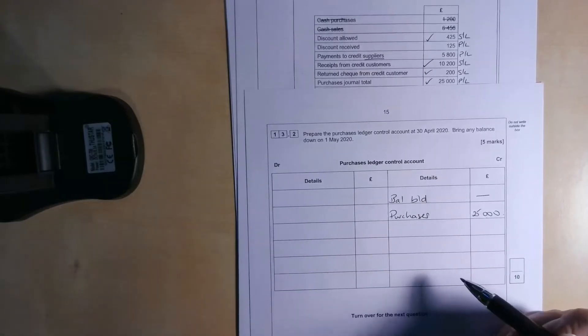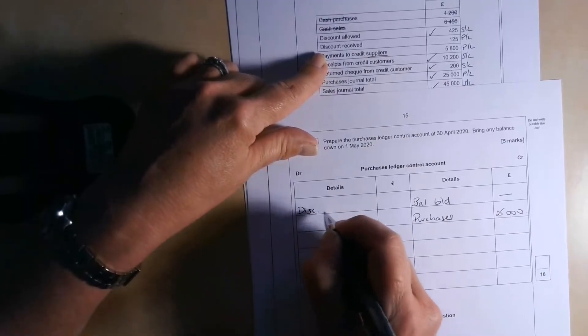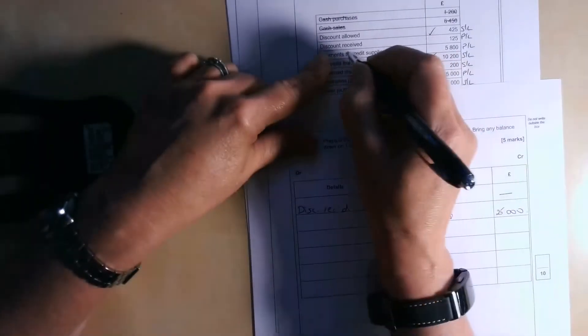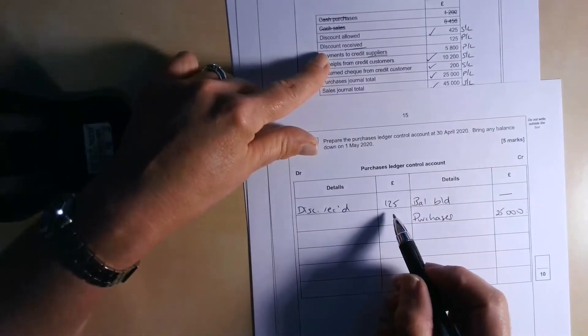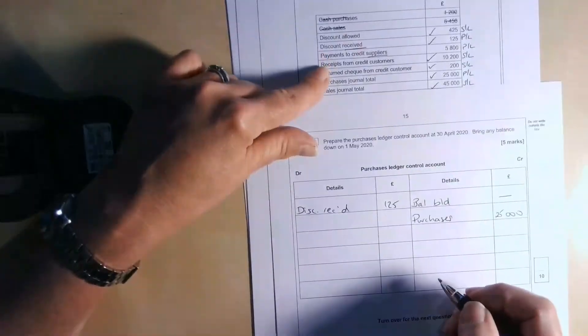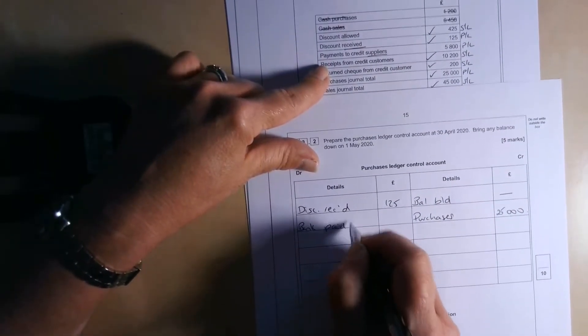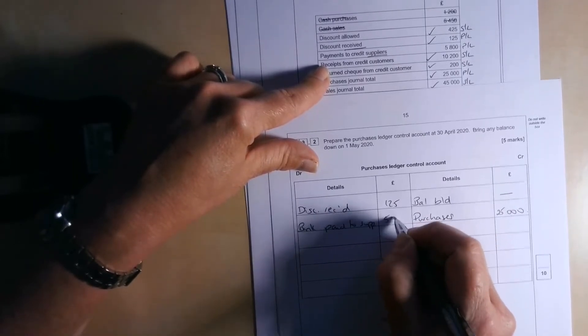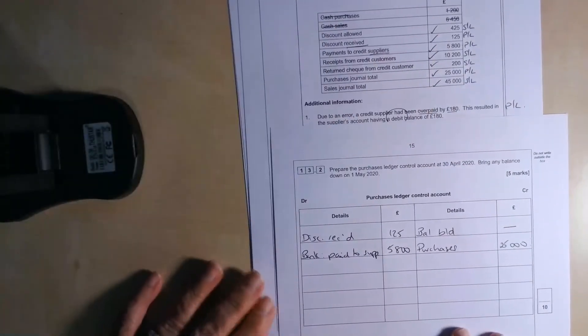Purchase returns obviously would reduce that. We've got discount received. That's obviously going to make the amount we owe the suppliers lower. So the double entry for that is received. So it's other income. So we credit the discount received account and debit the purchase ledger control account. We've got bank, paid to suppliers. Let's squash that in there. £5,800. And that's all of those figures used up.